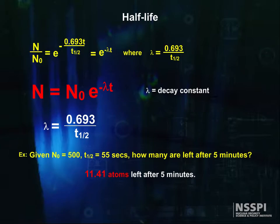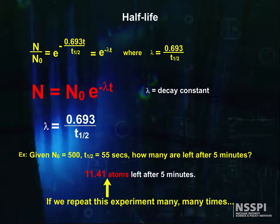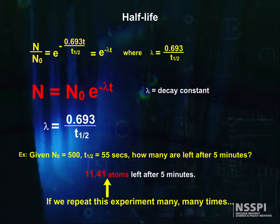What's wrong with our equation? Nothing is wrong with our equation. In fact, our equation is better than reality. What the equation says is, if you repeat this experiment many, many times, on average you will have 11.41 atoms left after 5 minutes. This is somewhat the same as the average couple in the United States having 2.13 kids, or 2.42 neutrons emitted during fission. The equation describes the expected value, to use the statistical term.